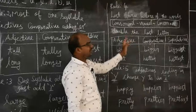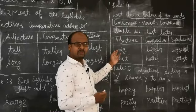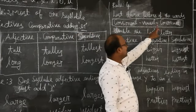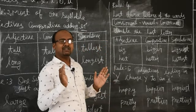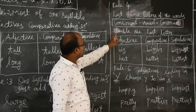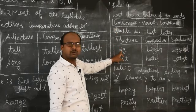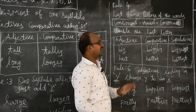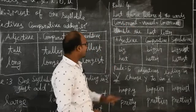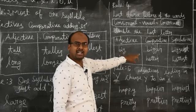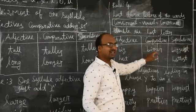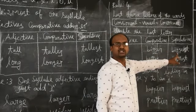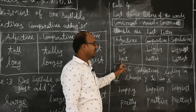Rule four: the last three letters of the word follow the pattern consonant-vowel-consonant. If you take a positive adjective word that has this pattern — for example, 'big': B is consonant, I is vowel, G is consonant — so the last three letters have the consonant-vowel-consonant pattern. What do we do? We double the last letter. So 'big' becomes 'bigger' in comparative — doubling the G. Superlative: biggest.